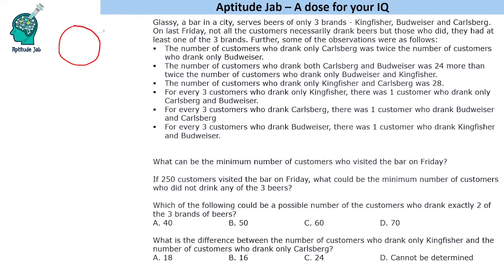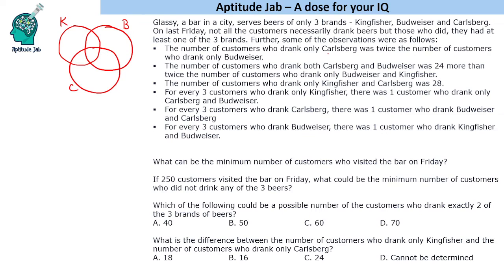Let us make a Venn diagram consisting of three sets: Kingfisher, Budweiser, and Karlsberg — a different kind of KBC. We are given that the number of customers who drank only Karlsberg was twice the number who drank only Budweiser. So let us say only Budweiser is A, and only Karlsberg will be two times A, that is 2A.